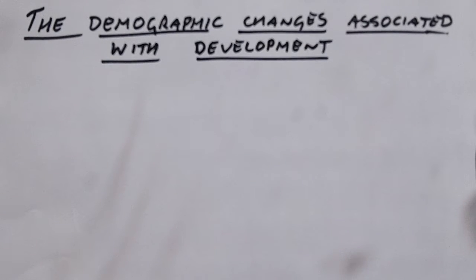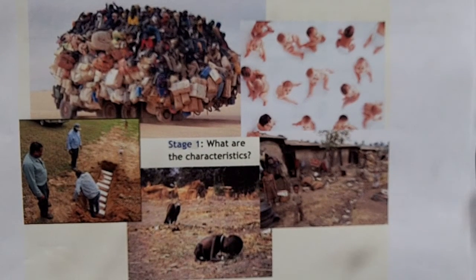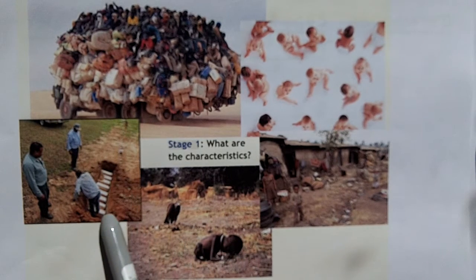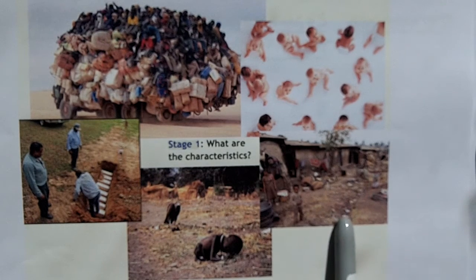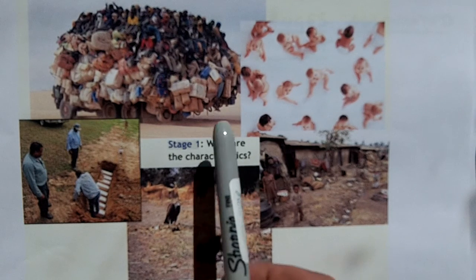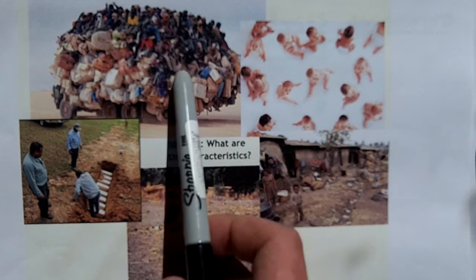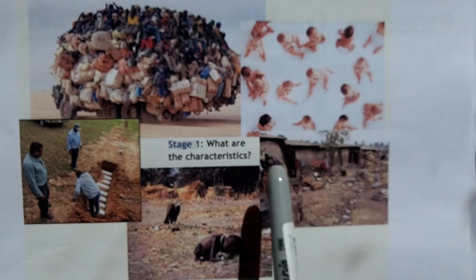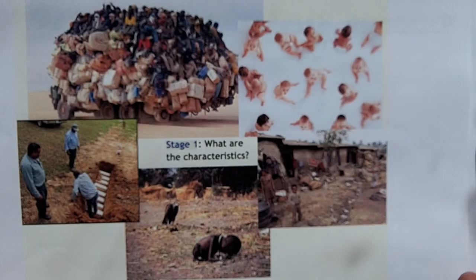Looking at each stage in turn: Stage 1 classic characteristics include a high death rate and high infant mortality, shown there by the size of the small coffins. You've got rather poor sanitary conditions leading to the higher death rate — squalid conditions, lack of sanitation, lack of running water. This tends to be poorer countries, LEDCs, often with quite high population density, a very high birth rate, and a low life expectancy.